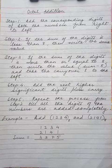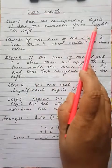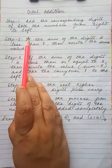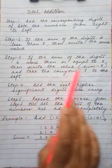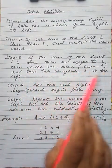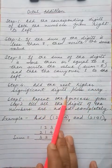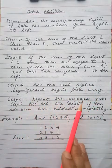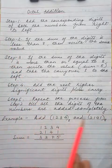Next comes octal addition. An octal number is added to another octal number in the same way as we add two decimal numbers. To perform octal addition, the following steps are to be followed: Add the corresponding digits of both numbers from right to left. If the sum is less than 8, write the same value. But if the sum is more than or equal to 8, write the value sum minus 8 and carry over 1 to the left-hand side column. Then add the next higher significant digits plus the carry, and repeat the process till all digits are added completely.